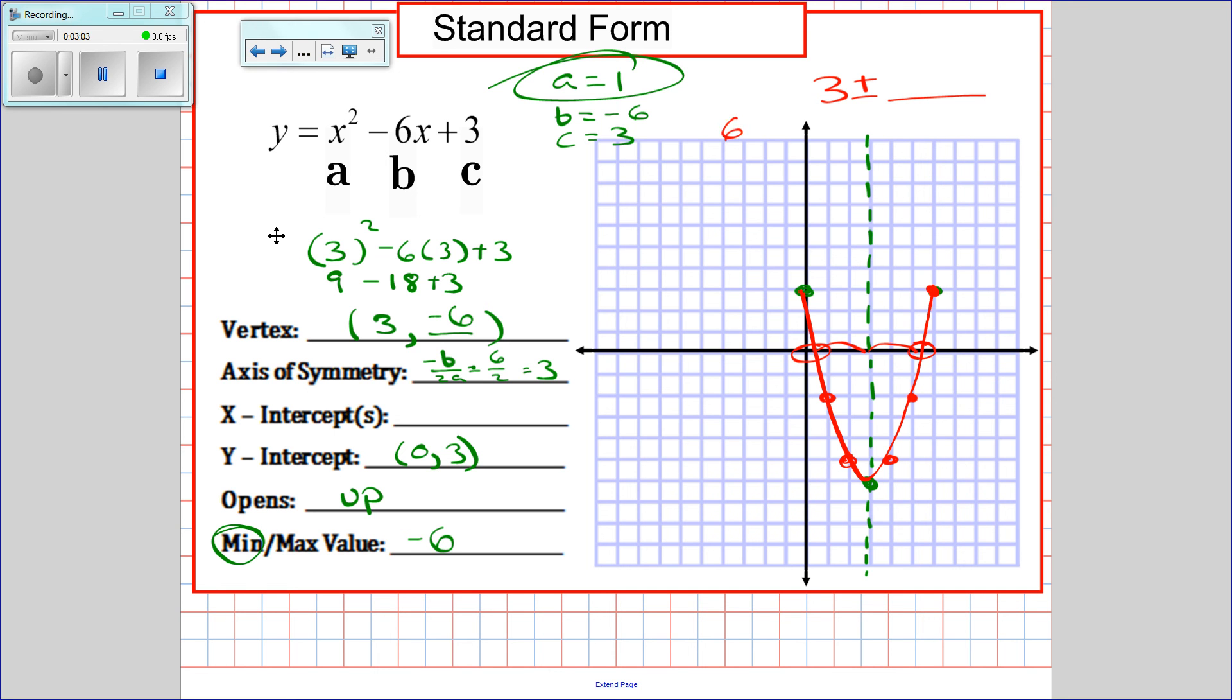So 6 plus or minus the square root of 36 minus 4 times 1 times 3 all over 2a, which is 6 plus or minus root 24 all over 2. Or 6 plus or minus 2 root 6 over 2, or 3 plus or minus the square root of 6.